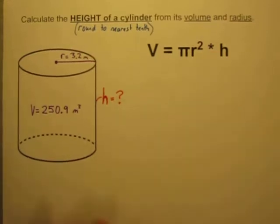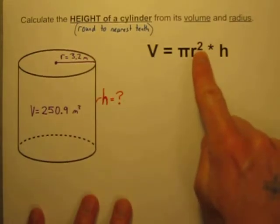So first we have to start with the formula. V, the volume, is equal to pi times the radius squared times the height.